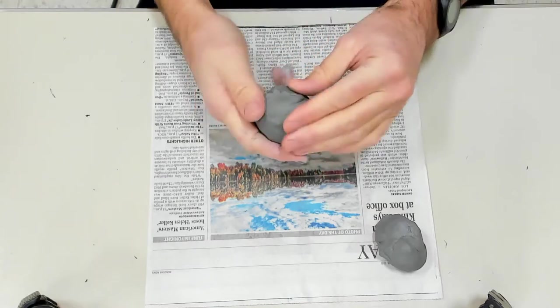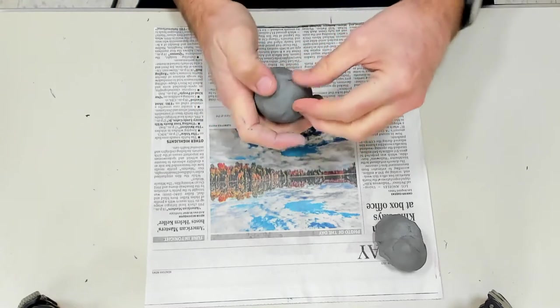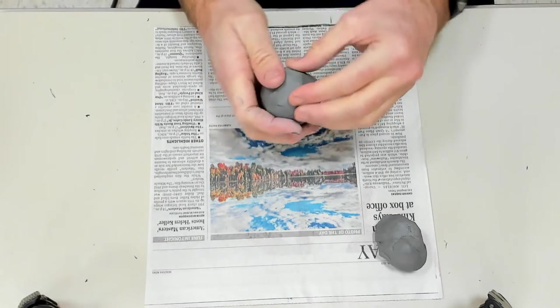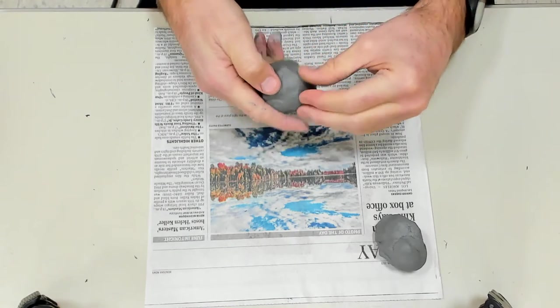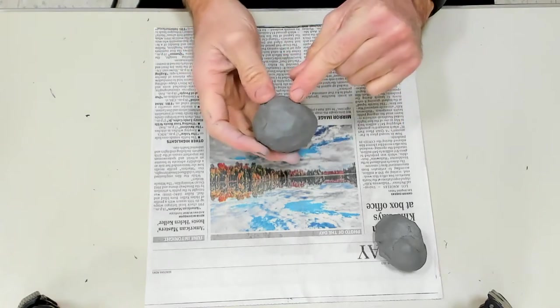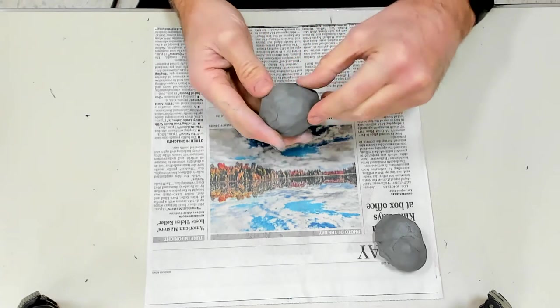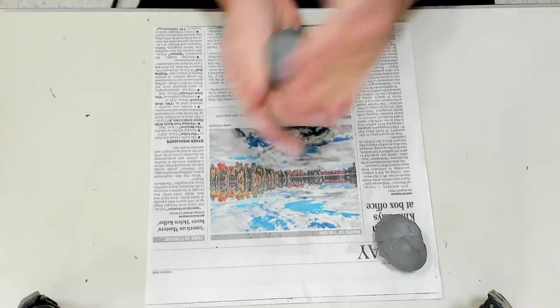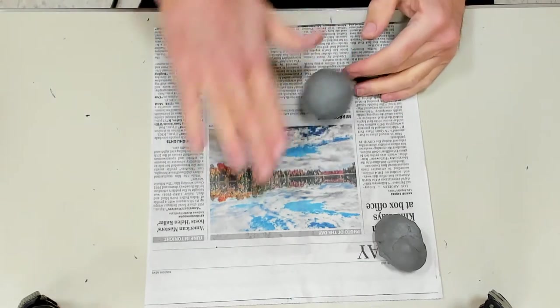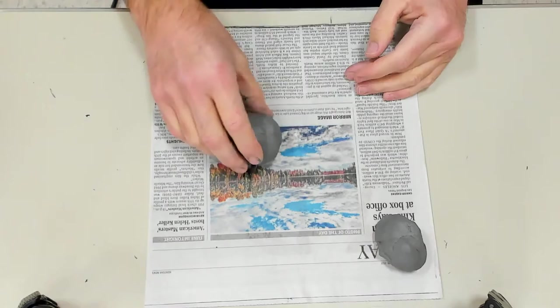Now I'm going over all the creases and kind of crossing them over so they don't turn into cracks. Anytime you see a line just cross it over like that. Ball it up again and that's good enough. Don't roll it around on your paper to make it perfect.